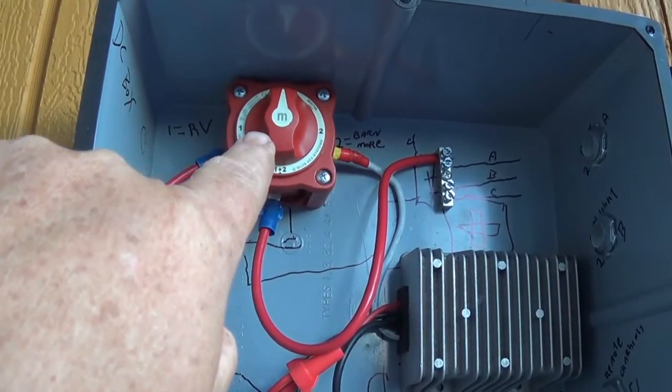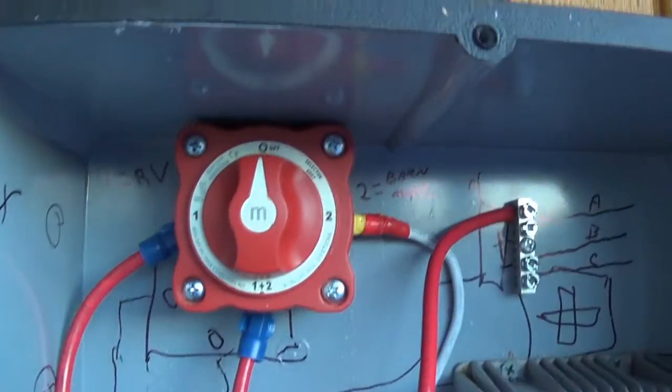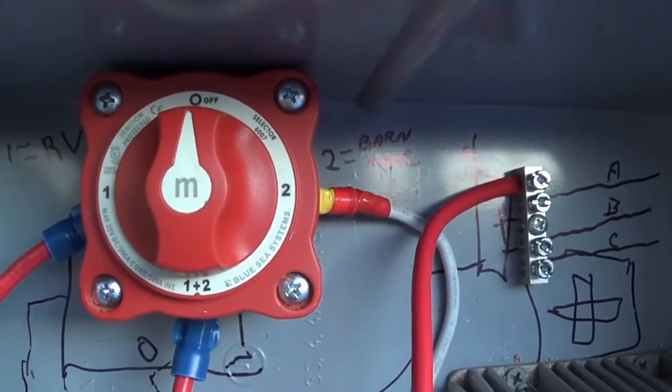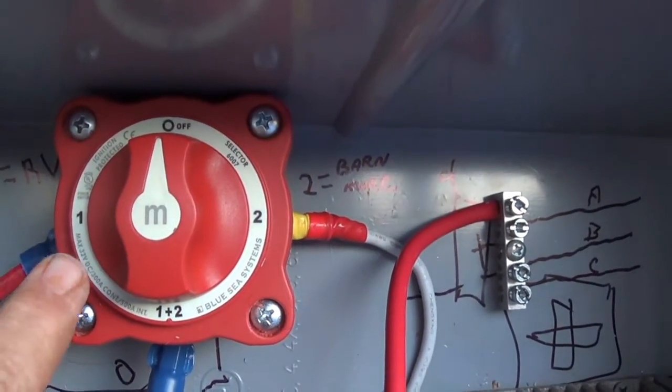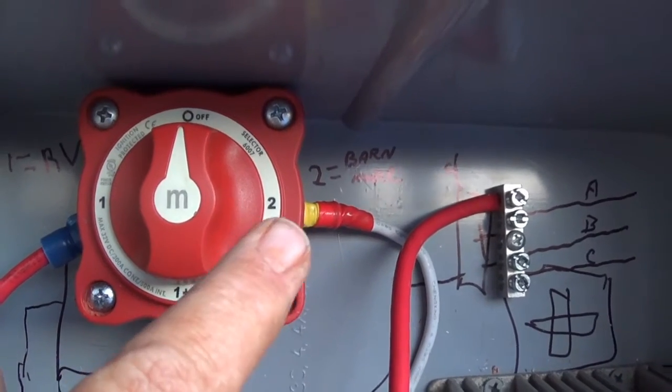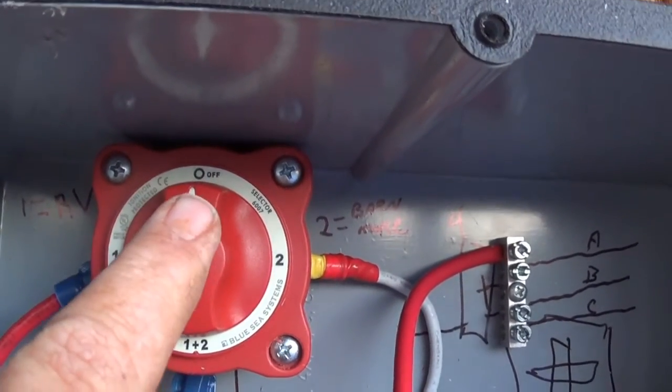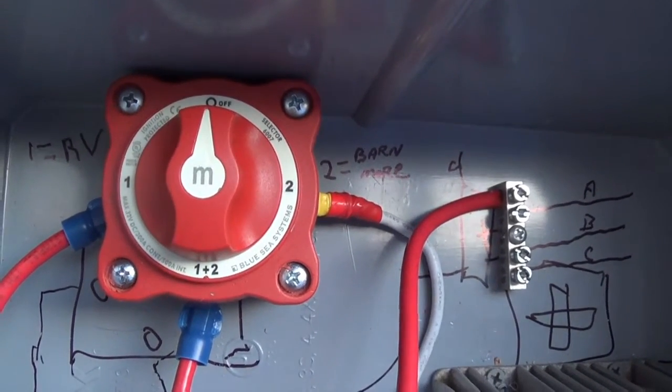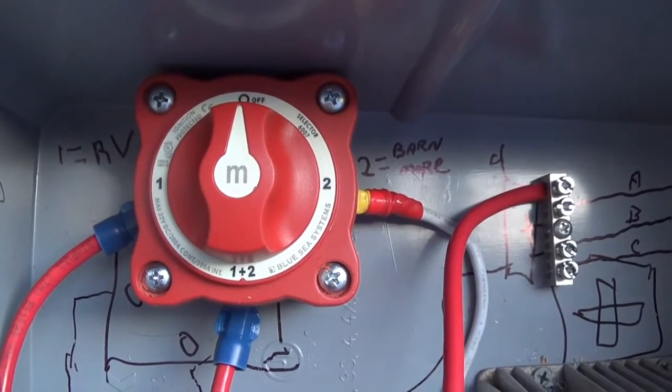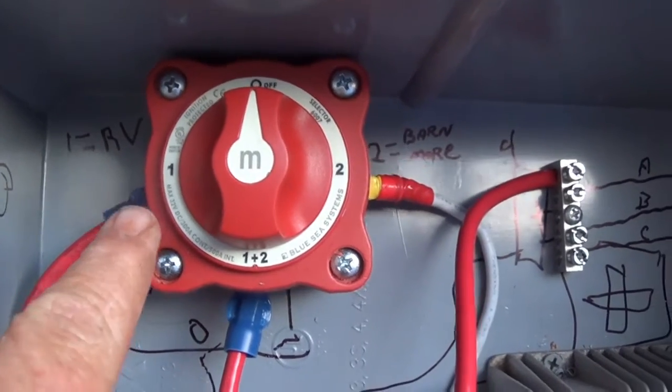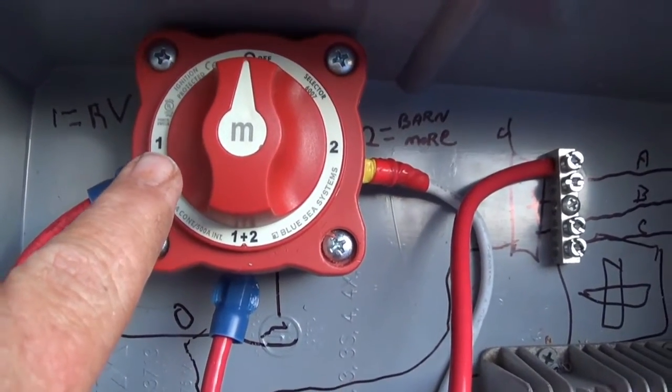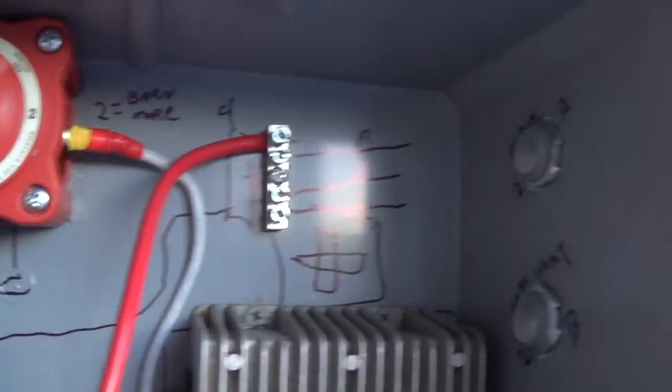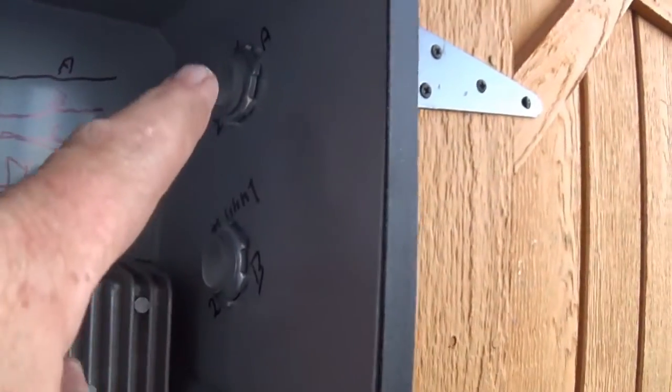Now what the switch is, is this is an isolator switch. You can see it says one on the left, this is one right there, one and two, and two, and up above it says off. So right now I don't have it pointing to any source or to any load really. If I put it to one it goes to my RV, but put it to two it's going to go to these three outlets.